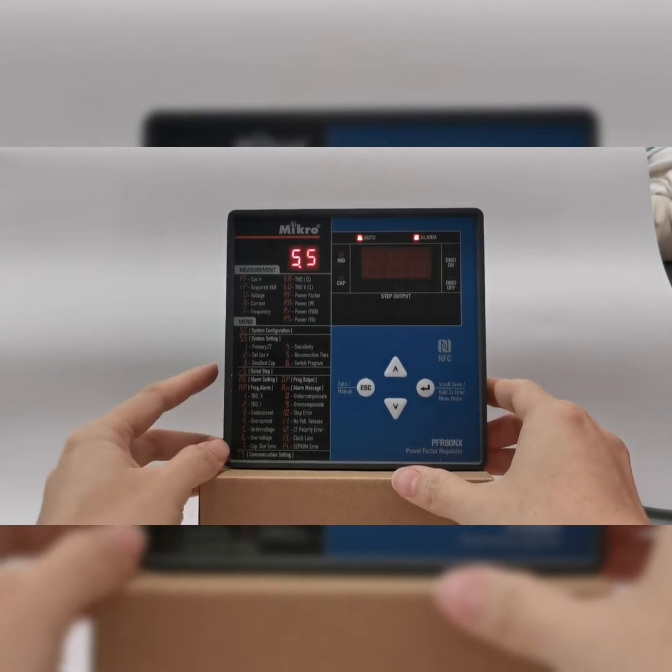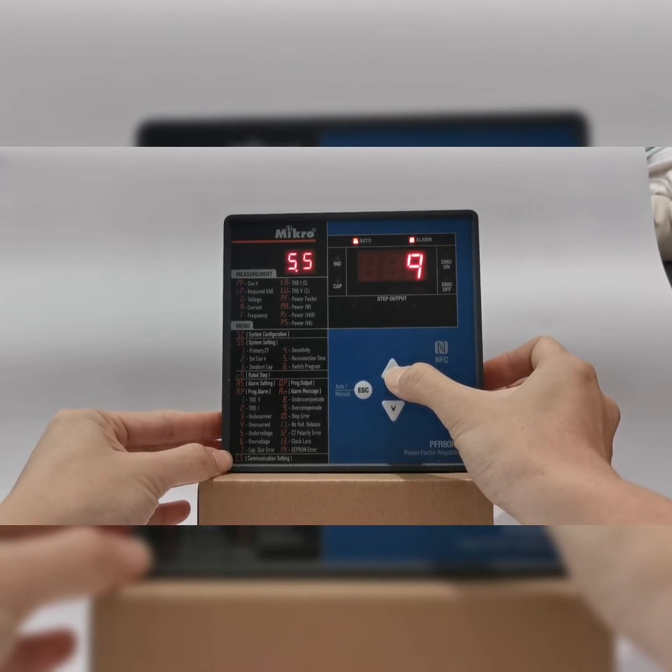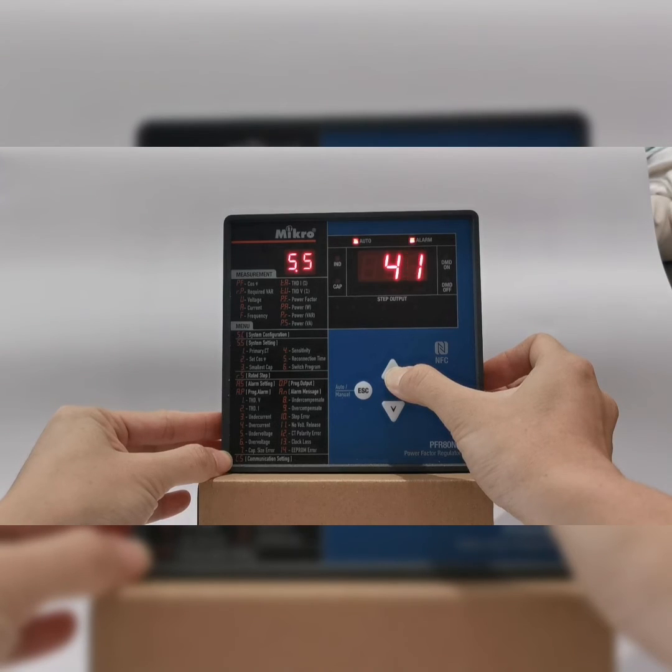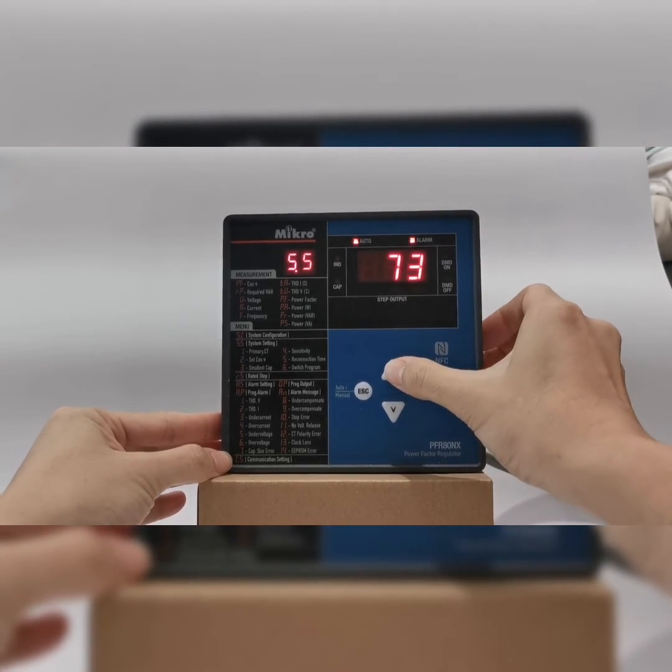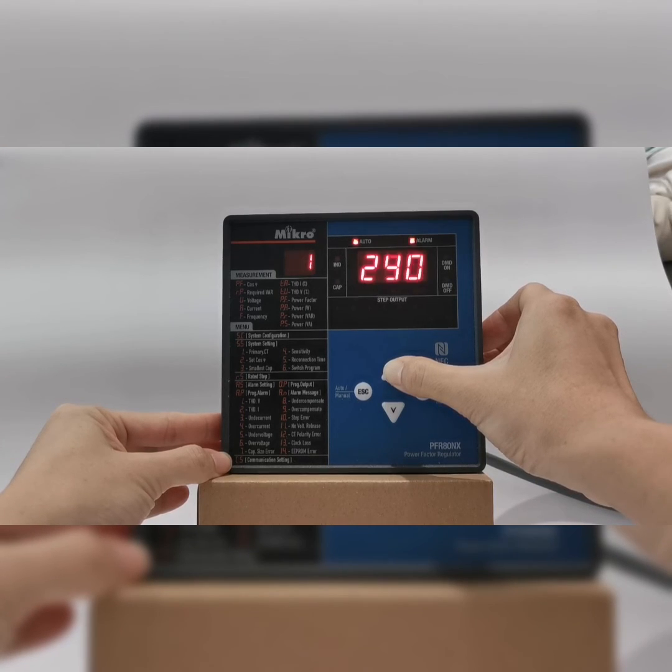When it's blinking, you are able to change the setting. You can go up and change it to, in this case, maybe set it to 800. When you hold it longer, the increment will go faster.